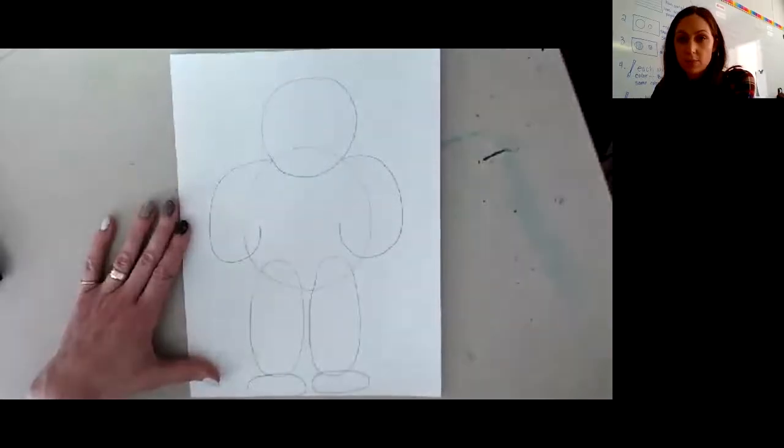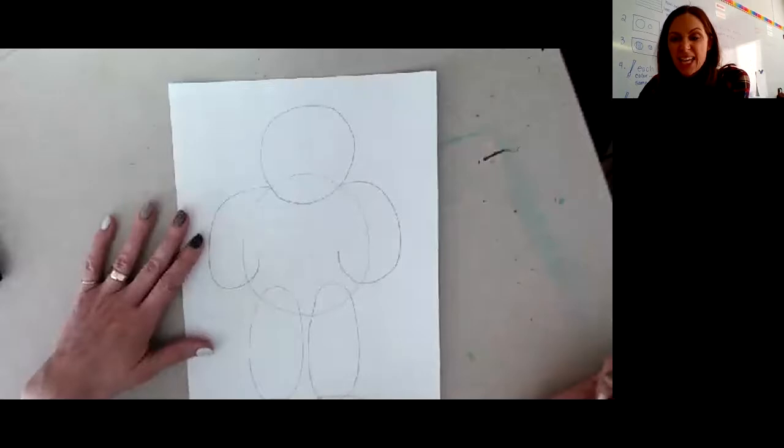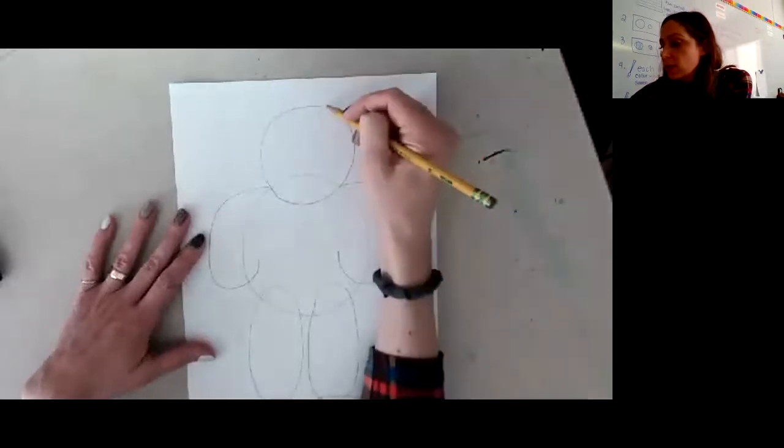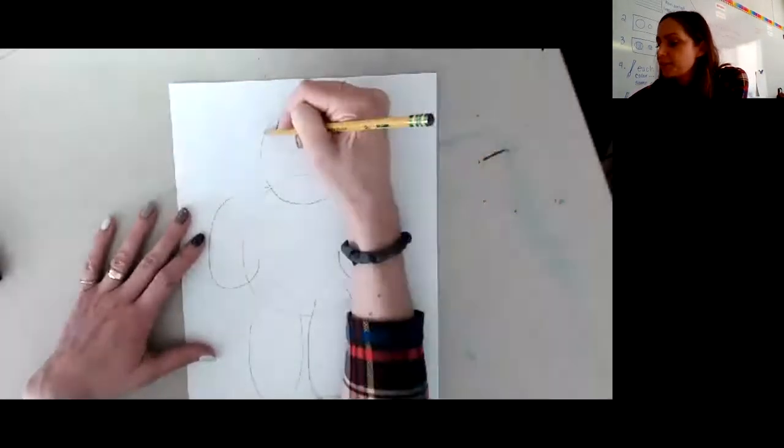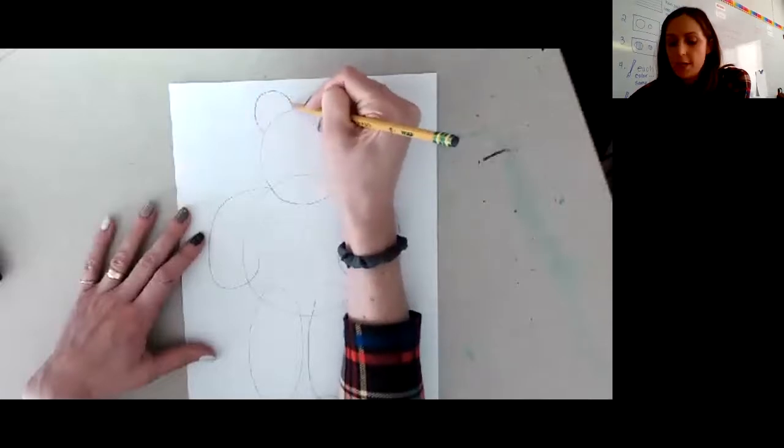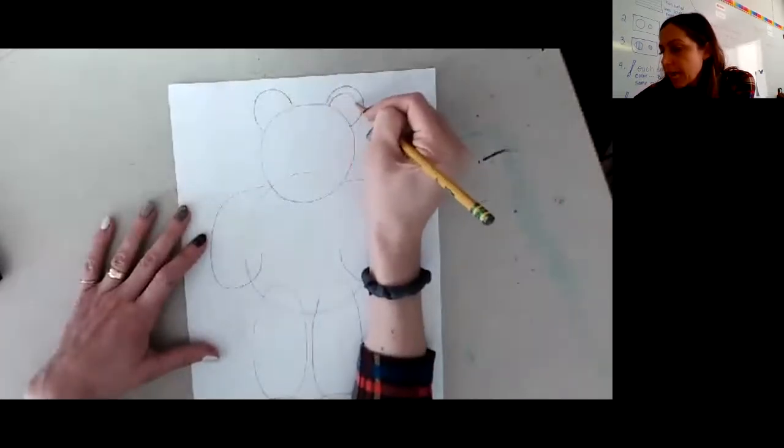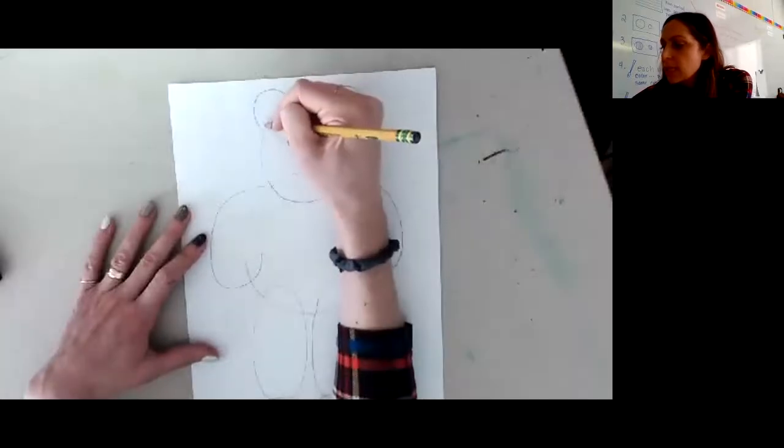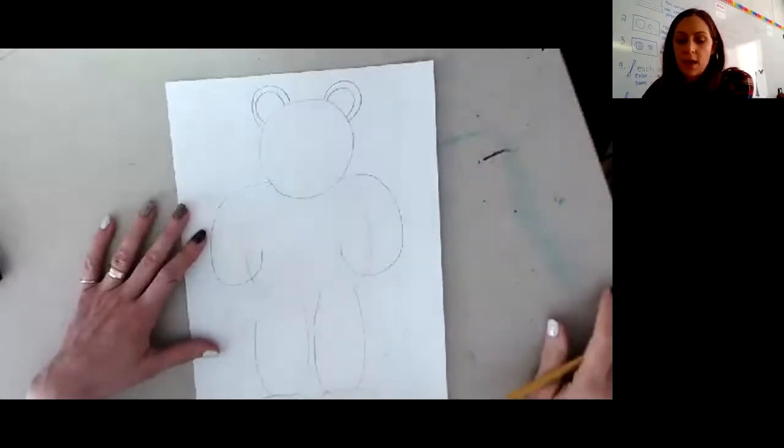That's going to be my bear's arms. At the top of my head, I'm going to add the ears. So I'm going to do two little rainbows at the top of my head, or my bear's ears. And I'm going to do a little rainbow inside that's a little bit smaller, just like that.